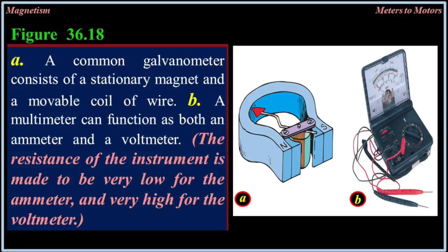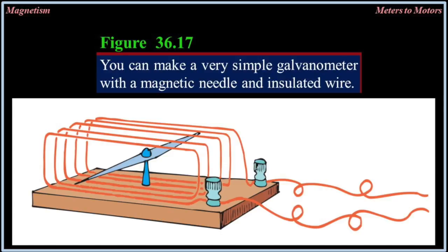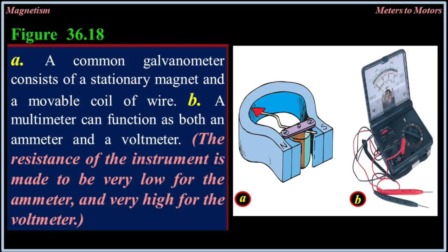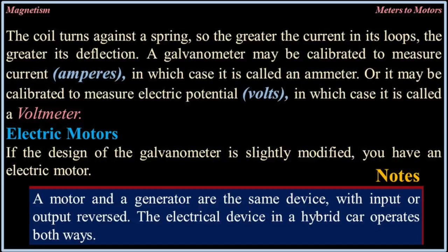A more common galvanometer design employs more loops of wire and is therefore more sensitive. The coil is mounted for movement and the magnet is held stationary. A common galvanometer consists of a stationary magnet and a movable coil of wire. A multimeter can function as both an ammeter and a voltmeter; the resistance of the instrument is made to be very low for the ammeter and very high for the voltmeter. The coil turns against a spring, so the greater the current in its loops, the greater its deflection.